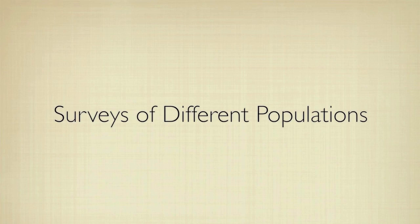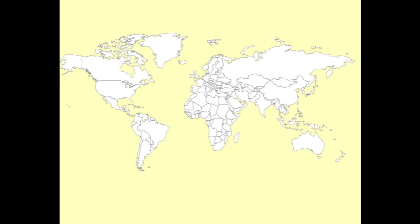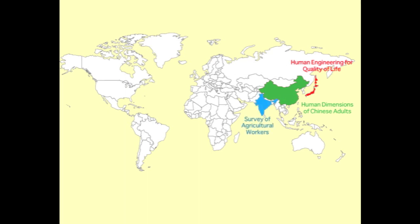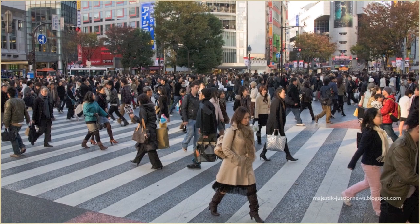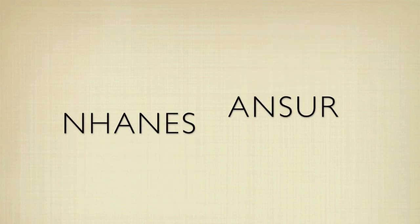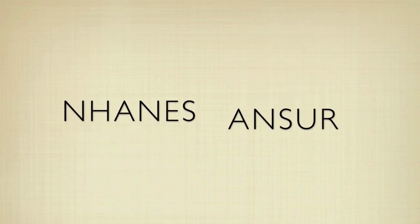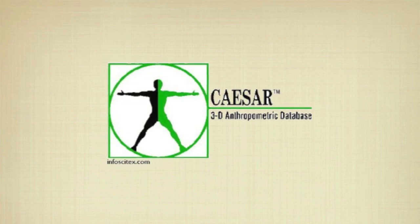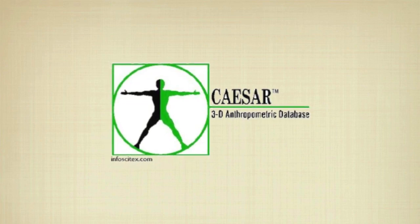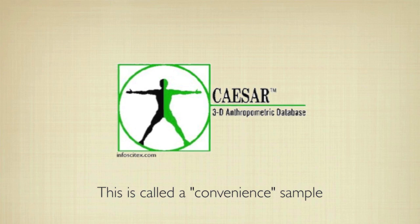A number of organizations around the world compile databases through surveys of different populations. Examples include Japan's Human Engineering for Quality of Life, China's Human Dimensions of Chinese Adults, India's Survey of Agricultural Workers, Germany's Microsensus, England's Health Survey, and the United States NHANES and ANSUR surveys. Many of these surveys are planned so that the resulting databases are representative of the compositions of the populations. NHANES and ANSUR are two such surveys. On the other hand, the CAESAR survey of North American and European adults has resulted in a database that is not representative of any particular population.